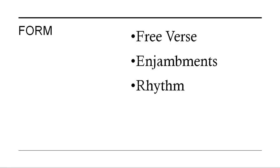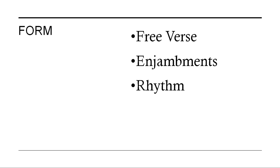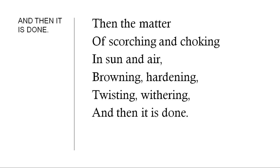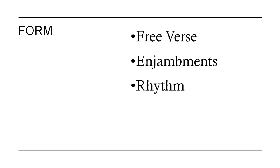Now let's look at the form of this poem. It's free verse — it does not rhyme very often. We also see enjambments — where one line runs into the other — as we saw previously in 'Duck and the Kangaroo.' Here too: 'Hack and chop, but this alone won't do it — not so much pain will do it, the bleeding bark will heal and from close to ground...' — the idea continues from one line to the next. Though it's not a rhymed poem, there is an intrinsic internal poetic rhythm within it.